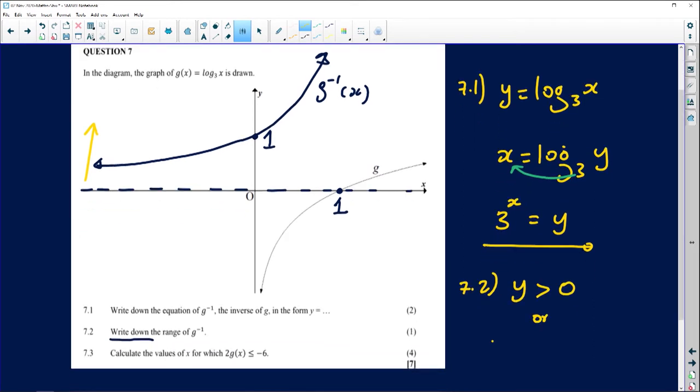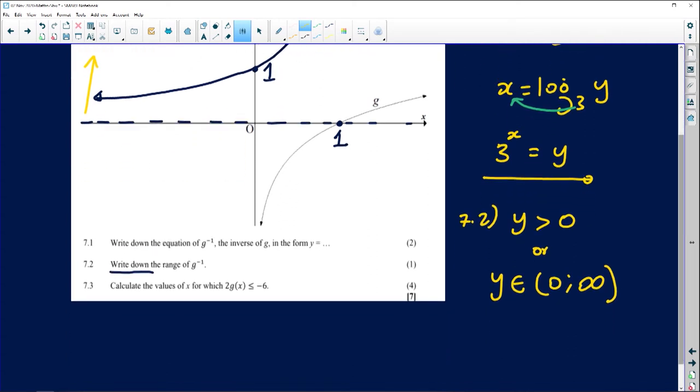Or you can even put it in set form, which means you can say all y values from what, from 0 until infinity. You can't have square brackets there because square brackets means you are including the values, and nobody can get to infinity and 0 is an asymptote, so these graphs will never get to the asymptote as well.